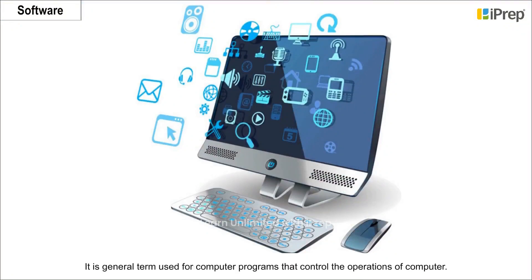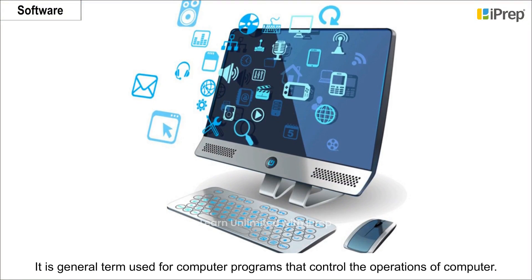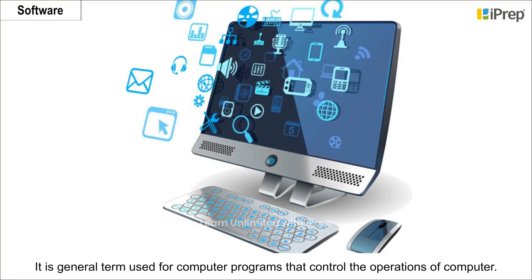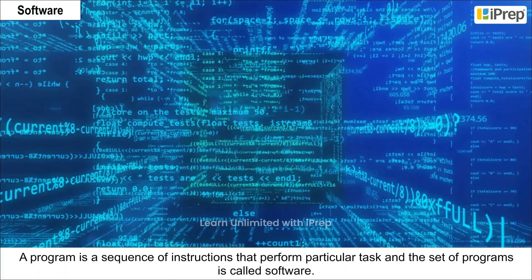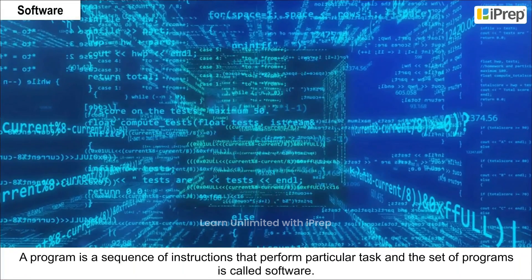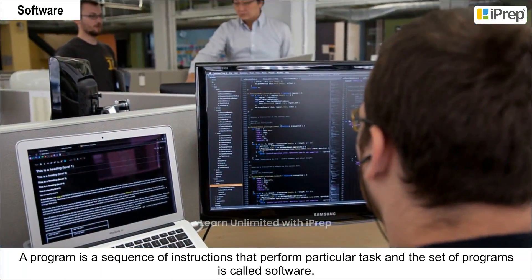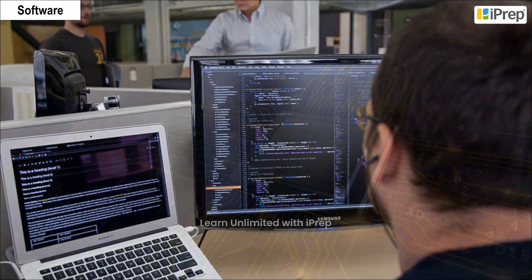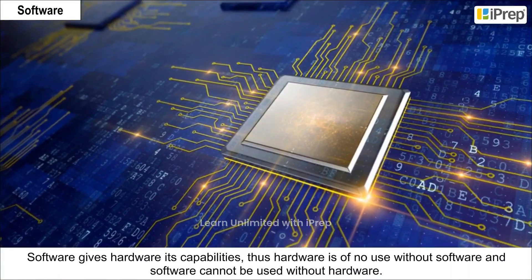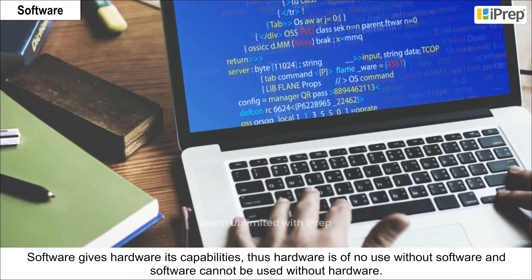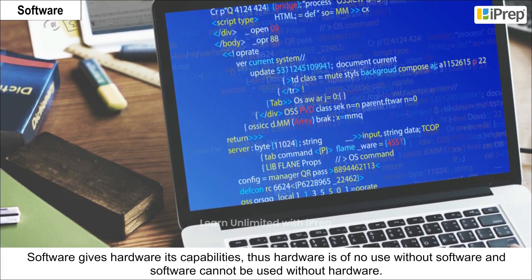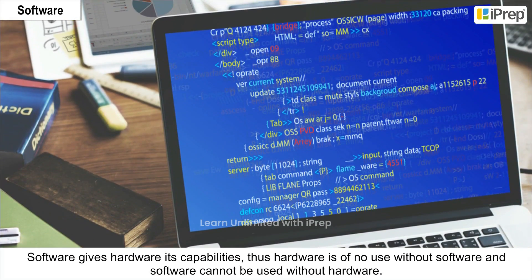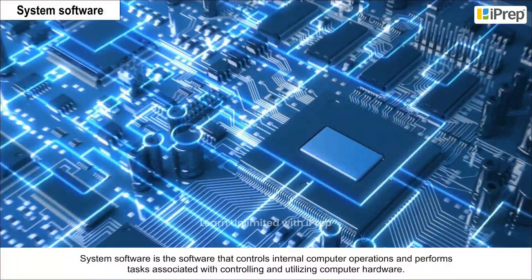System software is a general term used for computer programs that control the operations of a computer. A program is a sequence of instructions that perform a particular task, and the set of programs is called software. Software gives hardware its capabilities, thus hardware is of no use without software, and software cannot be used without hardware.